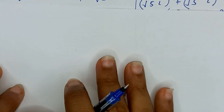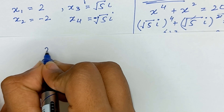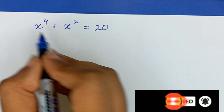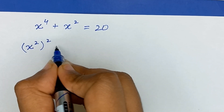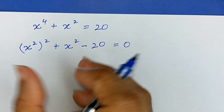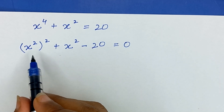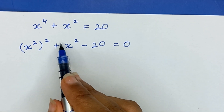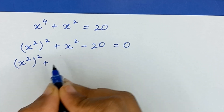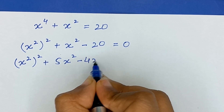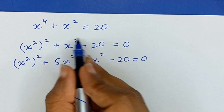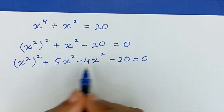Now we will solve with another method. Our equation is x raised to the power 4 plus x squared equals 20. We write x raised to the power 4 as x squared quantity squared, move 20 to the left to get minus 20, giving x squared quantity squared plus x squared minus 20 equals 0. This is a quadratic equation in terms of x squared. We solve by grouping: we need two terms whose sum equals 1 times x squared and product equals minus 20 times x to the power 4, so we use 5x squared and minus 4x squared.